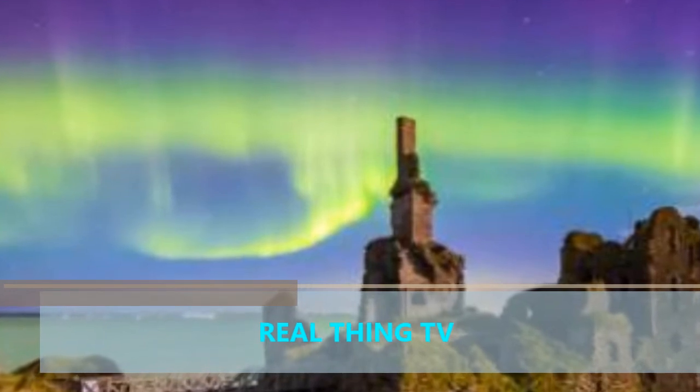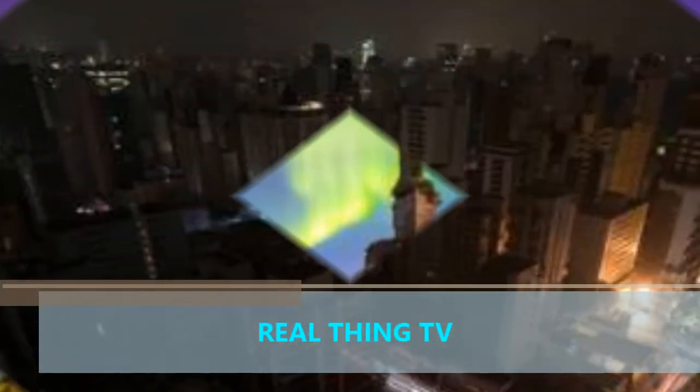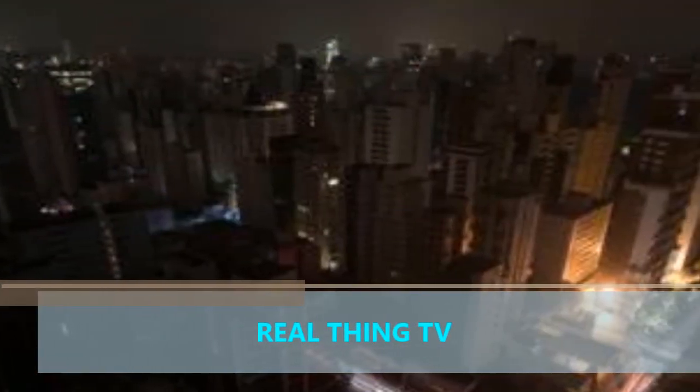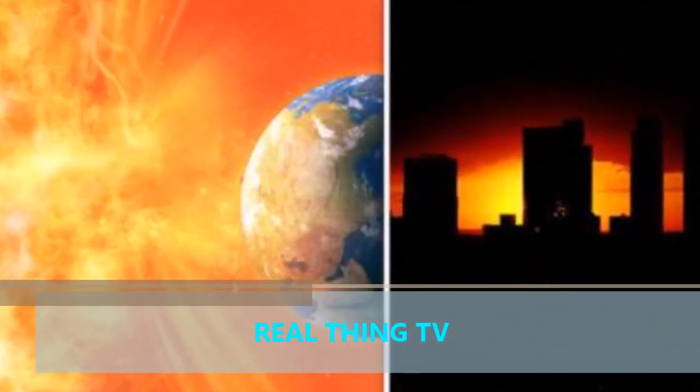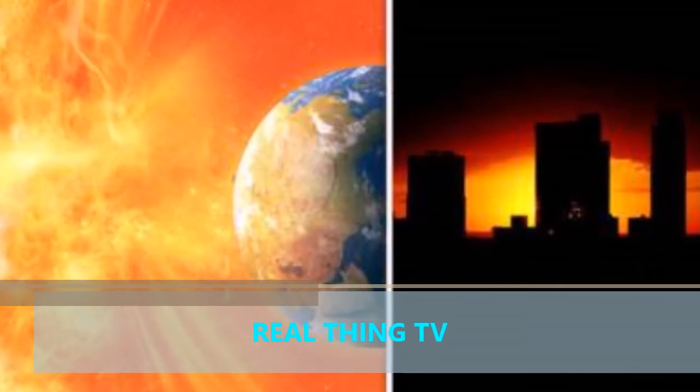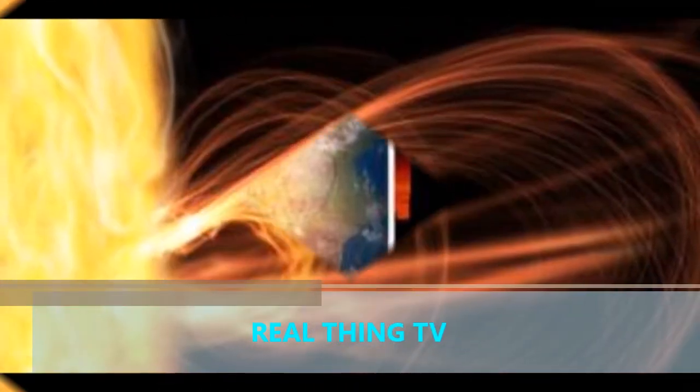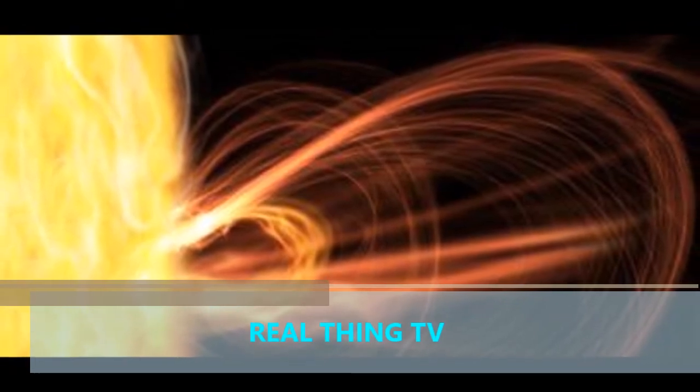The largest recorded geomagnetic storm in history occurred in 1859 and is called the Carrington Event, or sometimes the 1859 Solar Superstorm. It disrupted telegraph systems throughout Europe and North America, and auroras were seen in many parts of the world.